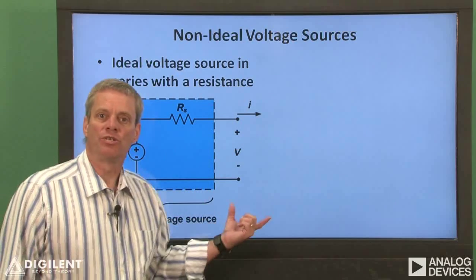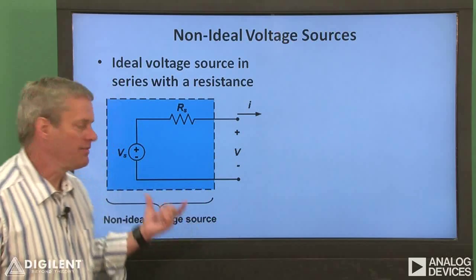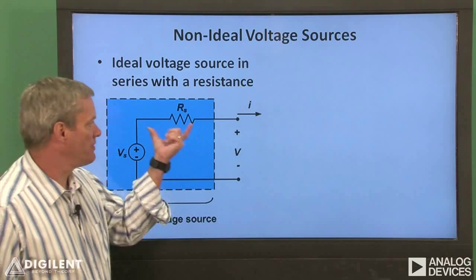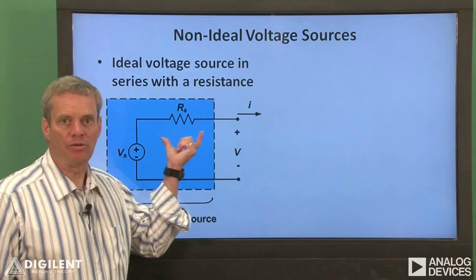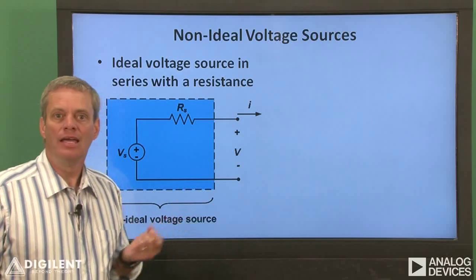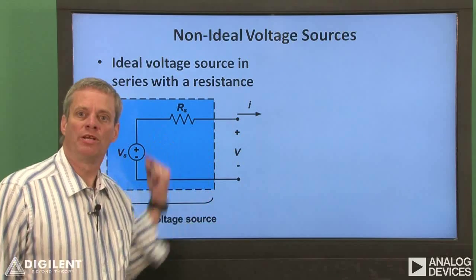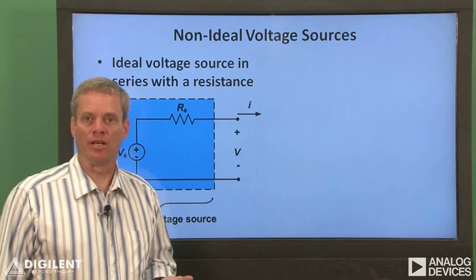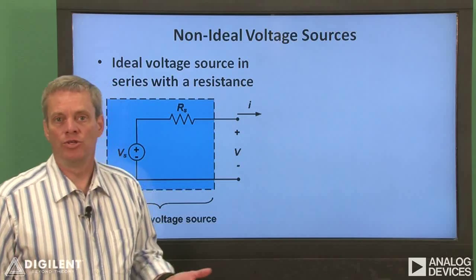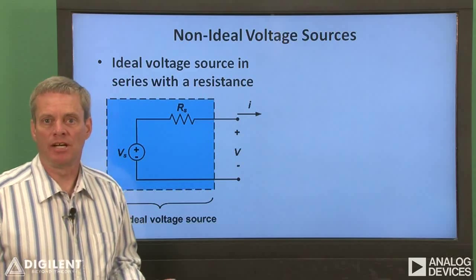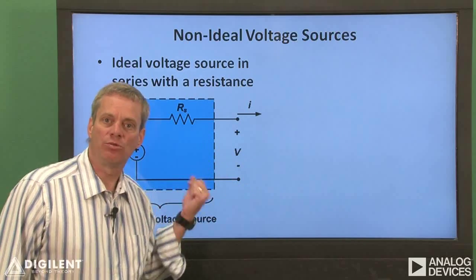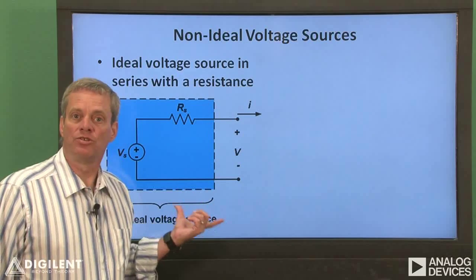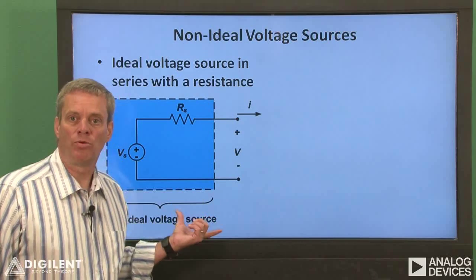Our non-ideal voltage source model will consist of an ideal voltage source in series with a resistor. In Chapter 4, we'll see why it's appropriate to model a fairly complex circuit, like those used in the Analog Discovery, as a simple circuit like this one. For now, we'll just assume that this is appropriate.